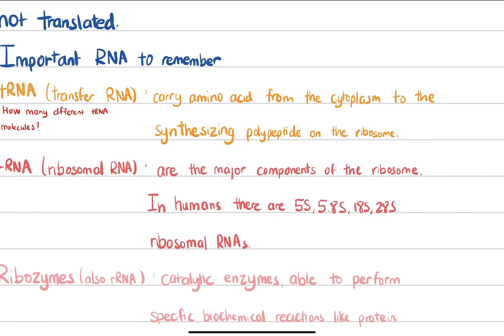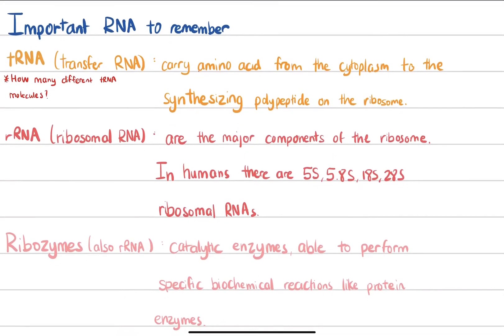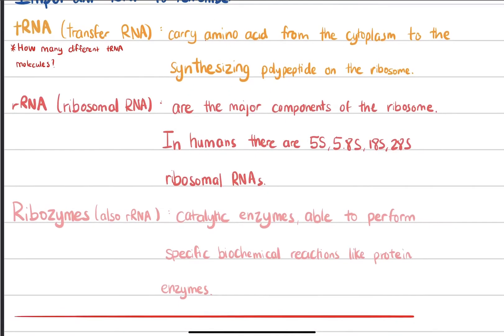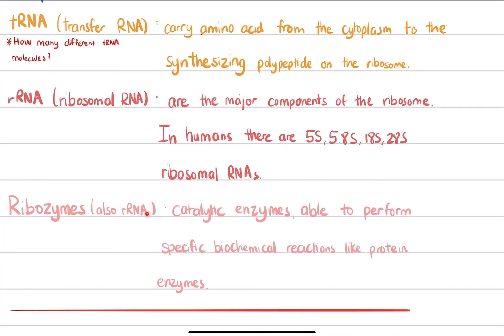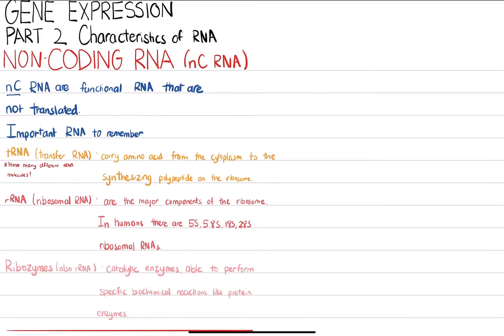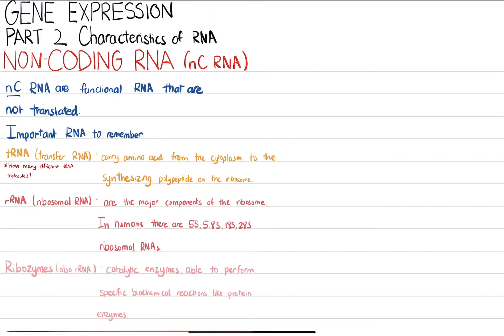We also have ribozymes. Ribozymes are enzymes which are able to perform specific biochemical reactions like protein enzymes. It's a catalytic enzyme. These are three important non-coding RNAs we have to know.